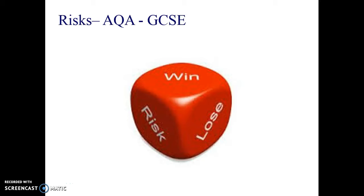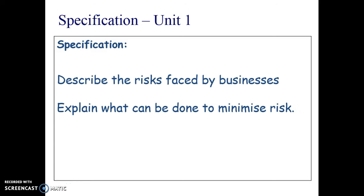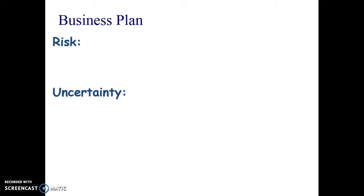With any business there's always a risk that it might go out of business or that something might go wrong. This is an important area in unit one — you need to be able to describe the risks faced by businesses and explain what can be done to minimise them. Sometimes that's a six-mark question, so you have to give quite a lot of detail in your answer explaining exactly how it can minimise risk.